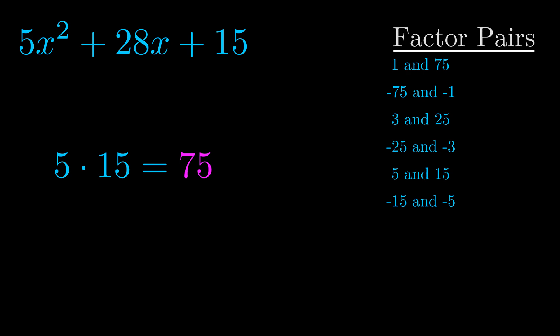The b value is the coefficient on the x term. That's the middle term, the one that we haven't done anything with yet. And really this is the only factor pair that we need.